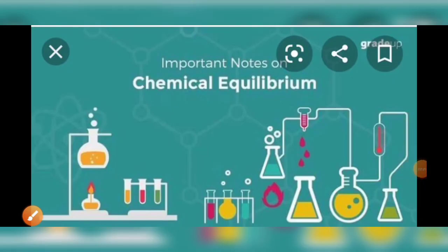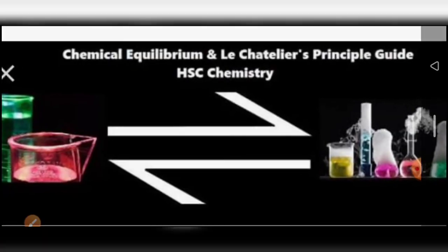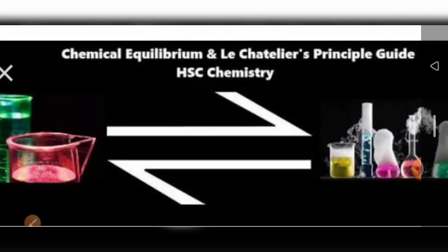Good morning students. Today we have to see about state of equilibrium. There are two types: one is chemical equilibrium, another one is physical equilibrium. In a reversible reaction we have chemical equilibrium, and in an irreversible reaction we have physical equilibrium — there is also equilibrium but it will be a physical equilibrium.